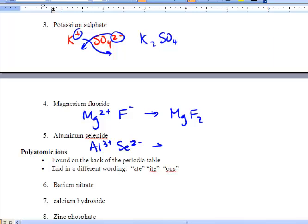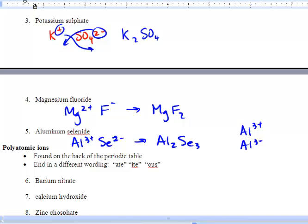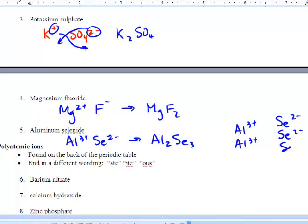MgF2 and we get Al2Se3. Now what that says is we need an Al3+, an Al3+, and we need three selenides to balance those out. You'll notice that these equal six and this equals six. So negative six and positive six equal zero.